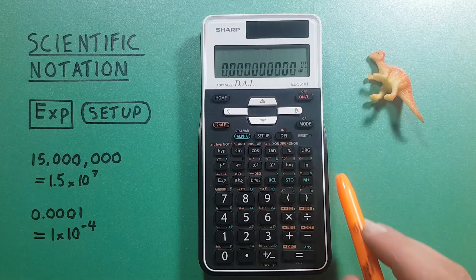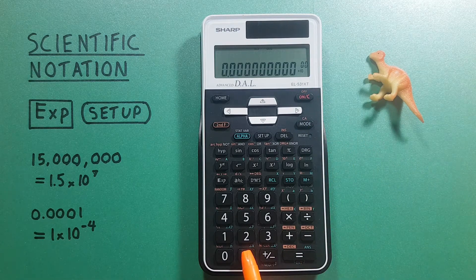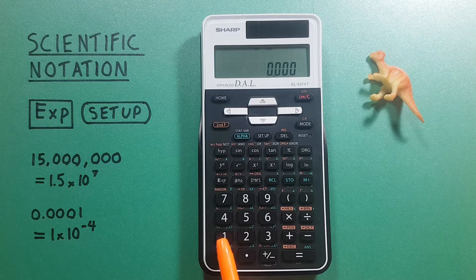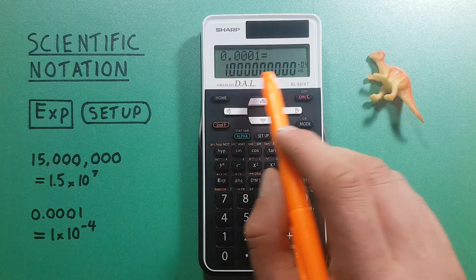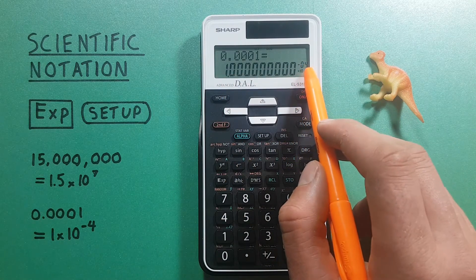Again this works with small numbers. So if we enter 0.0001 equals, this converts to 1 times 10 to the negative fourth power for us.